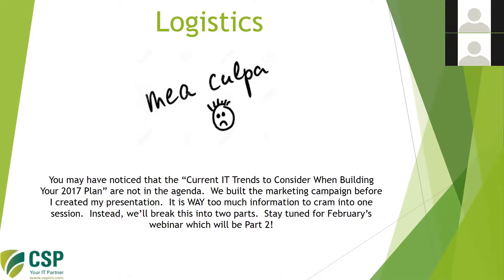One mea culpa: you may have noticed that the current IT trends to consider when building your 2017 plan are not in this agenda. Some of our marketing material did have a lot about that section. Once I started building the presentation, I realized it was just way too much information. So today we are really going to talk about what is the plan, how do you do it, and why do you need to do it. Our February webinar is going to be part two of this series, diving into the current trends we see on the horizon in 2017.